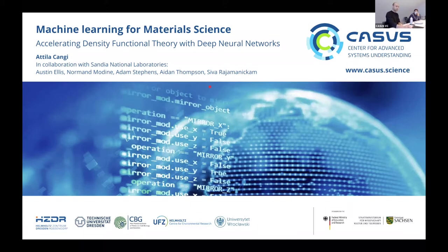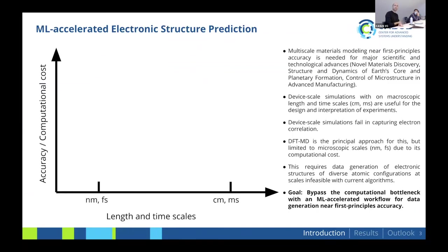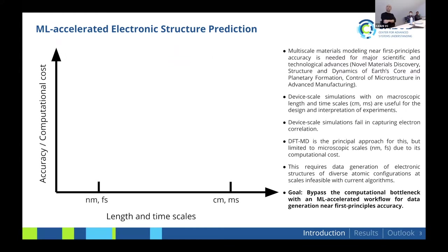The general context is material science and methods for material science, in particular DFT. The main result is basically how we can accelerate electronic structure calculations with DFT using machine learning. The use for this would be multi-scale materials modeling — we would need modeling at higher accuracy, close to first-principles accuracy, which would be very useful.